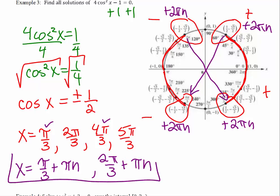So the most efficient way to represent all possible coterminal solutions to the four that we found on the unit circle would be to start with the smaller of the two that are halfway around the circle from each other, and then add multiples of π. Start with the smaller of these two that are halfway around the circle from each other, and add multiples of π.